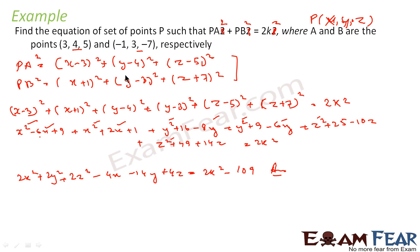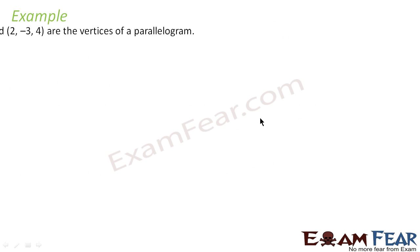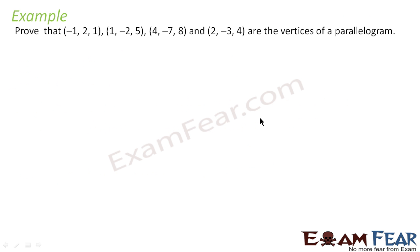So what we have done here: we found the value of PA² and PB², said PA² plus PB² equals 2K², and got the equation. Let's take one more example.